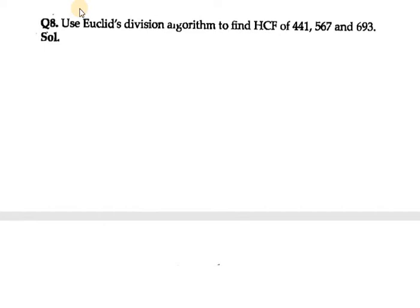Hello everyone, let's start with question number 8, exercise 1.3. It says to use Euclid's Division Lemma to find the HCF of 441, 567, and 693. In this case, we need to take any two numbers first.